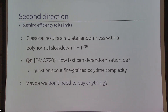The second direction is pushing the efficiency of all this to the limits. In the classical results, if you take a probabilistic algorithm running in time t and simulate it deterministically, you get an algorithm running in time t-to-the-thousand — theoretically a good answer, but in practice nobody will ever run that. A couple of years ago, Deron et al. raised the question: how fast can de-randomization be? It's a question about fine-grained polynomial-time complexity — what's the exponent? Can we get it down to one?